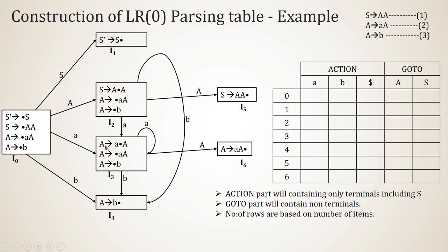We have generated the LR0 automaton and numbered the grammar productions: S' → S as production 0, S → AA as production 1, A → AA as production 2, A → B as production 3. The parsing table has rows based on item numbers (0 through 6) and columns for terminals in the action part, and non-terminals in the goto part.